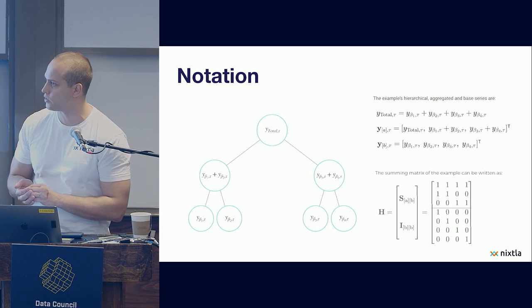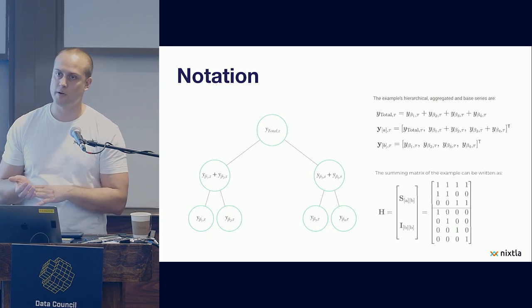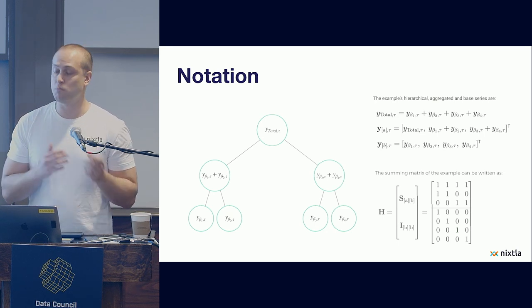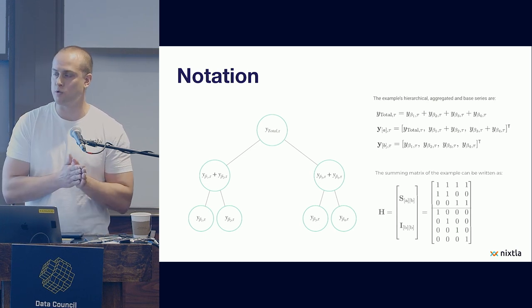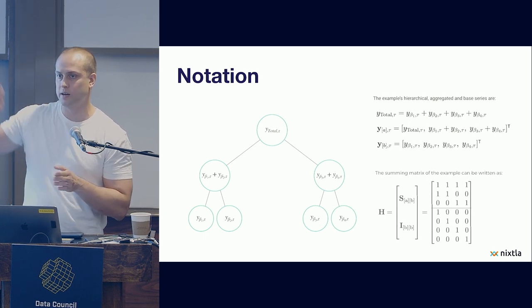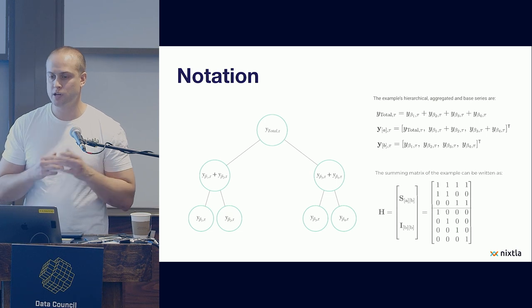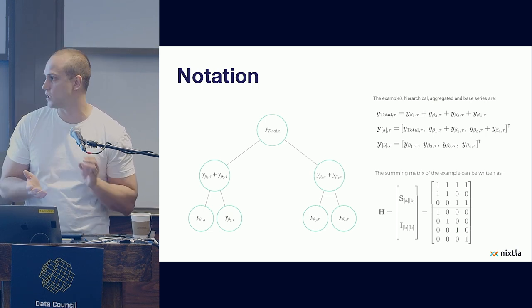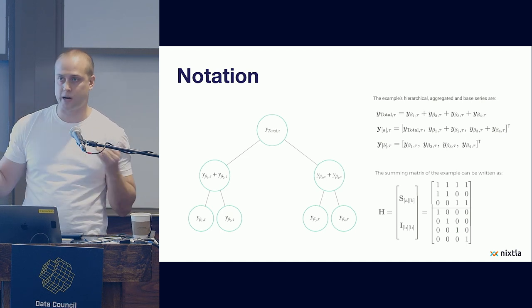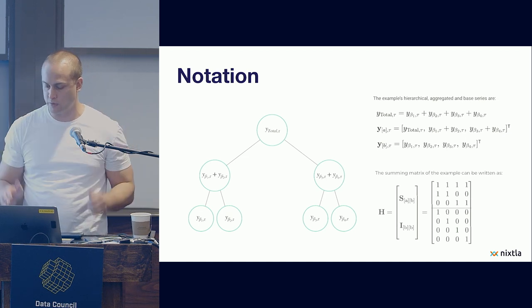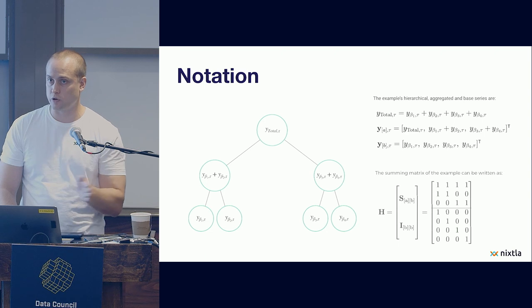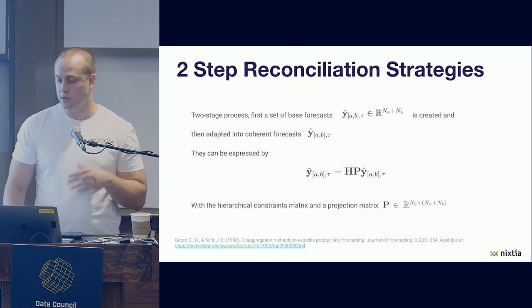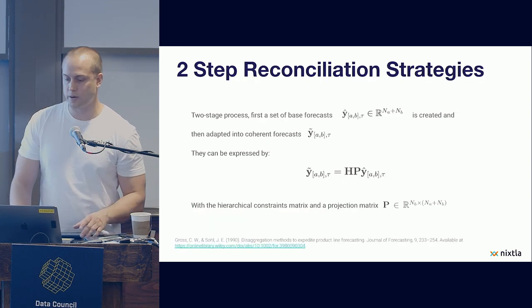This is what we call the summing matrix of the hierarchical structure. And this is very powerful intuition because if you create the summing matrix of your hierarchical time series, and you multiply that matrix by your base forecast, then you get what's called a hierarchical reconciled bottom-up approach. So what I just explained would be the same as doing the first approach where we forecast base levels, and then we create the structure based on summing up the base levels.